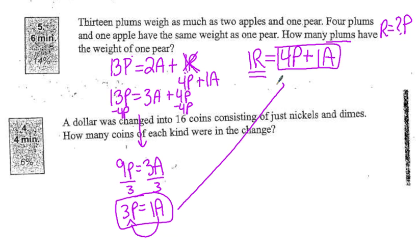Now if I go back to this equation, I've got 1 apple. So I can replace that 1 apple with what it's equal to, which is 3p. So here then I've got 1r equals 4p plus 3p, or 1r equals 7p.